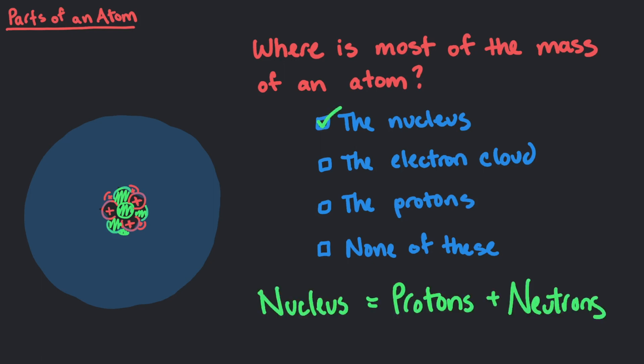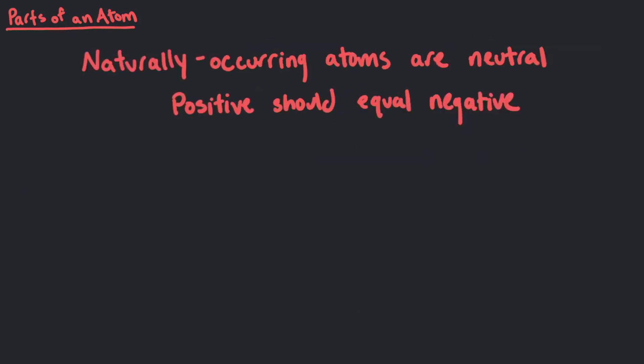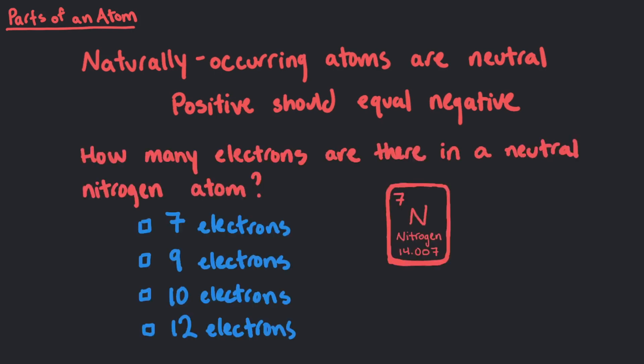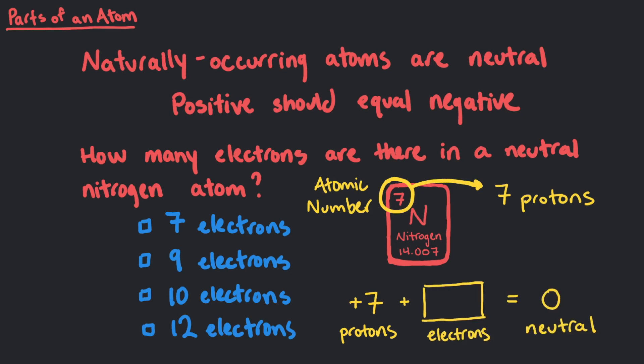Finally, one important thing to remember is that naturally occurring atoms will be neutral. So how many electrons are there in a neutral nitrogen atom? Remembering that the atomic number is found above the element symbol, we know that nitrogen has 7 protons, so the charge of the nucleus is plus 7. Since the atom is neutral, there must be an equal number of electrons, each with a charge of negative 1, so there are also 7 electrons.